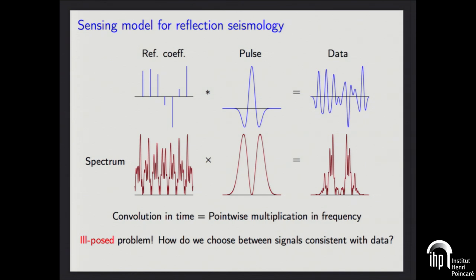However, as in compressed sensing, we can say this signal is going to be sparse — we think there aren't that many layers underneath. Maybe we want to make even further assumptions. And the question is: under those assumptions, can we recover the original signal?